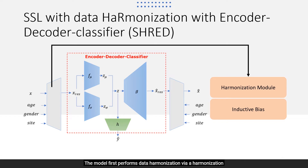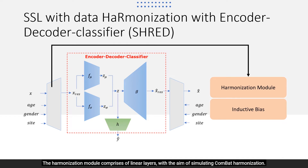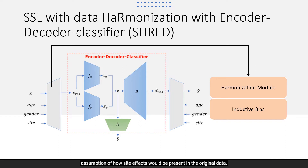The model first performs data harmonization via a harmonization module to remove site effects from the original data. The harmonization module comprises linear layers, with the aim of simulating ComBat harmonization. Hence, it would introduce some inductive bias due to the assumption of how site effects would be present in the original data.